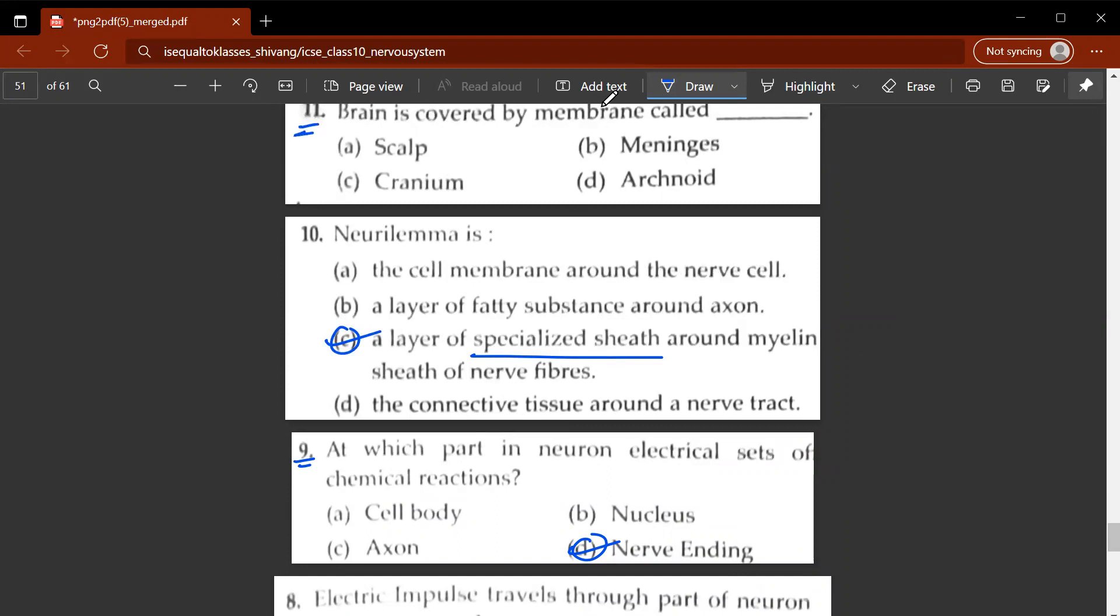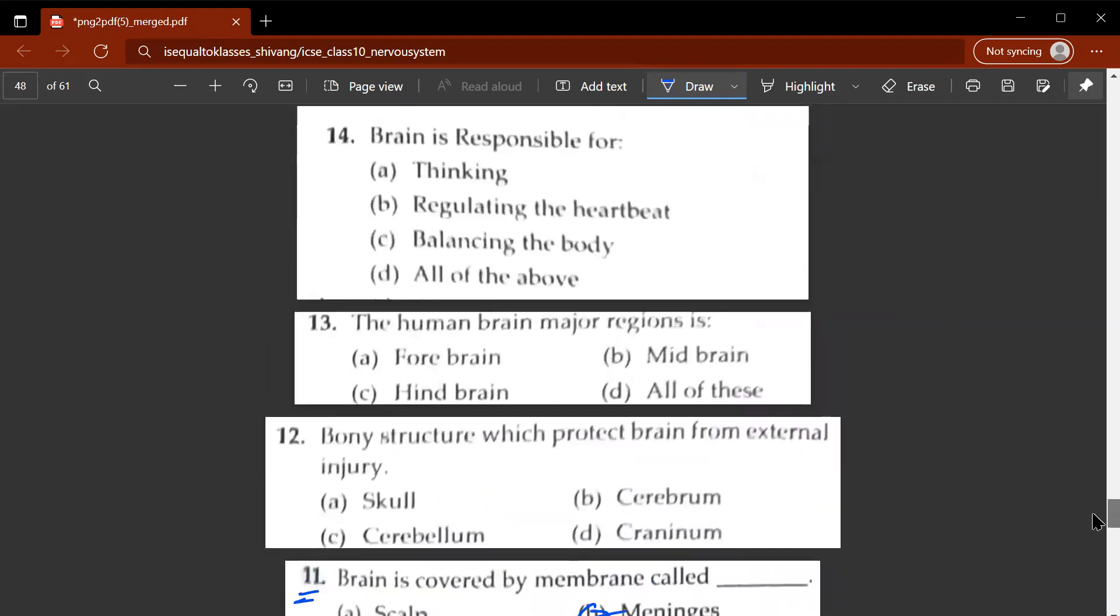Eleventh question, brain is covered by a membrane called what? It is covered by a membrane called meninges. Tenth question, a bony structure which protects the brain from external injury is called, it is called D, cranium. For a thirteenth question, the human brain major regions is, so the major regions is D, all of these. So you have the forebrain, you have the hindbrain and you have the midbrain.